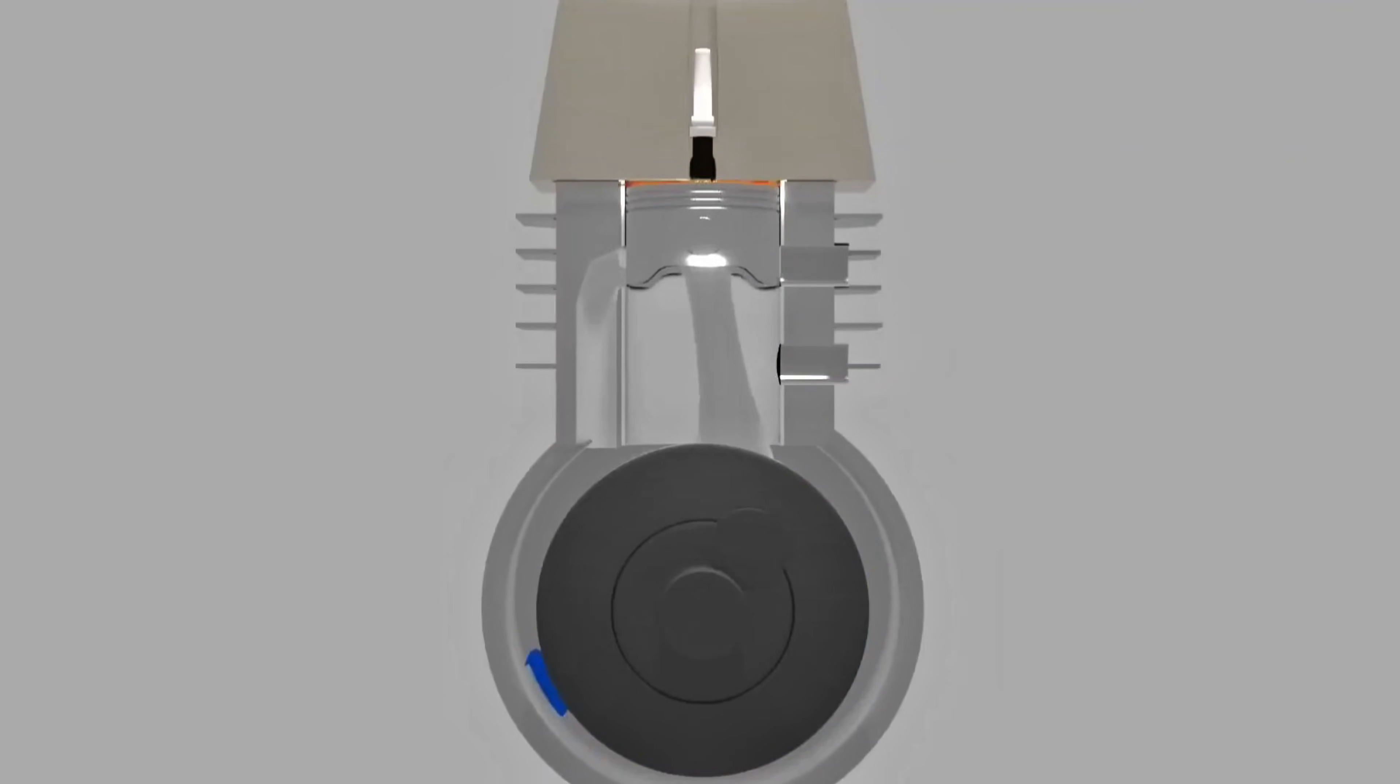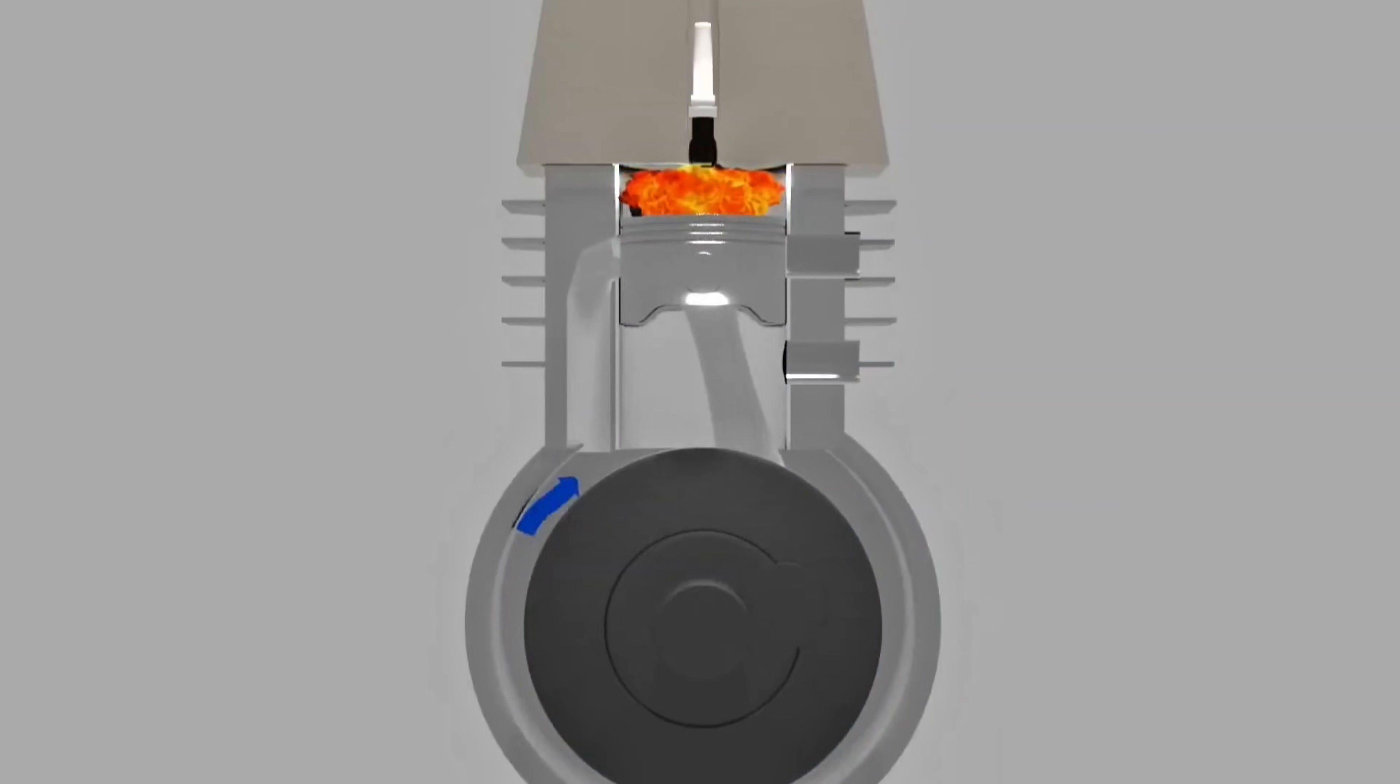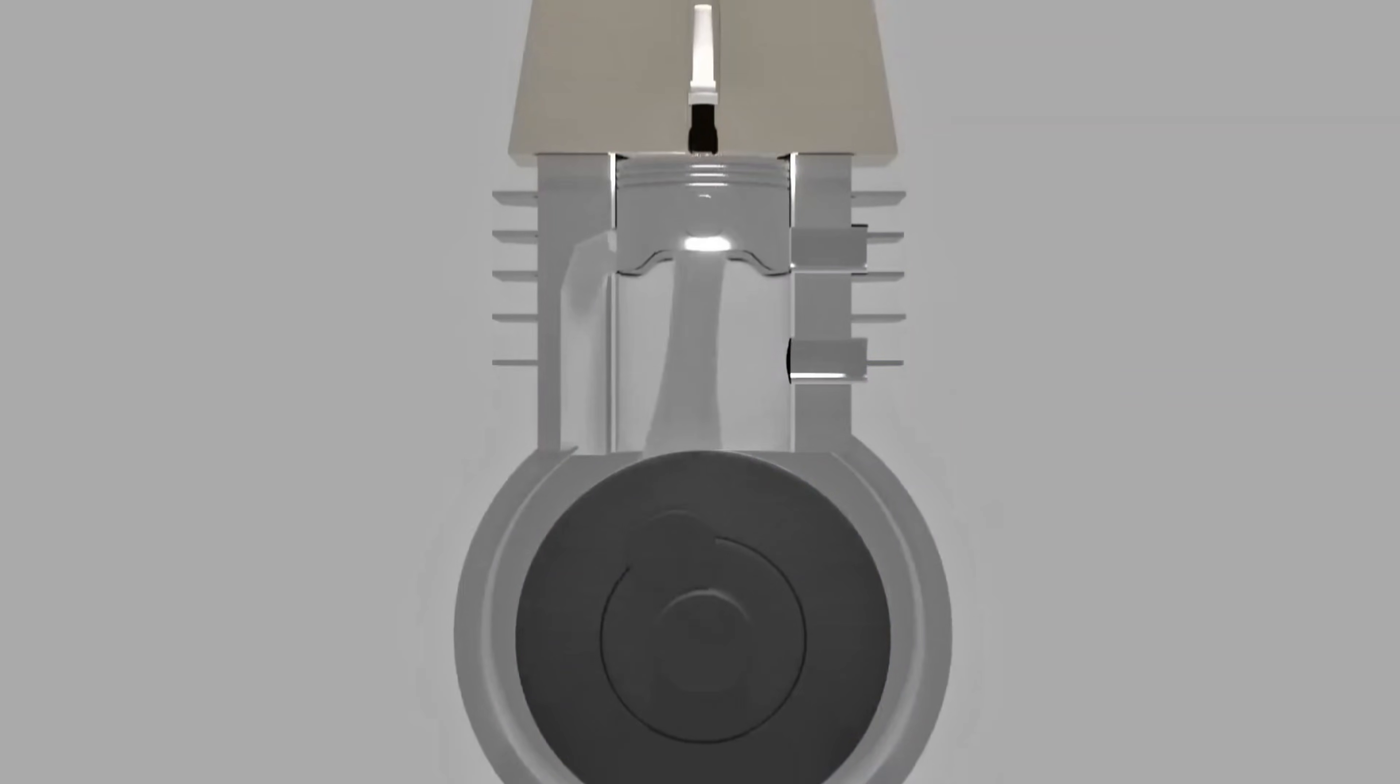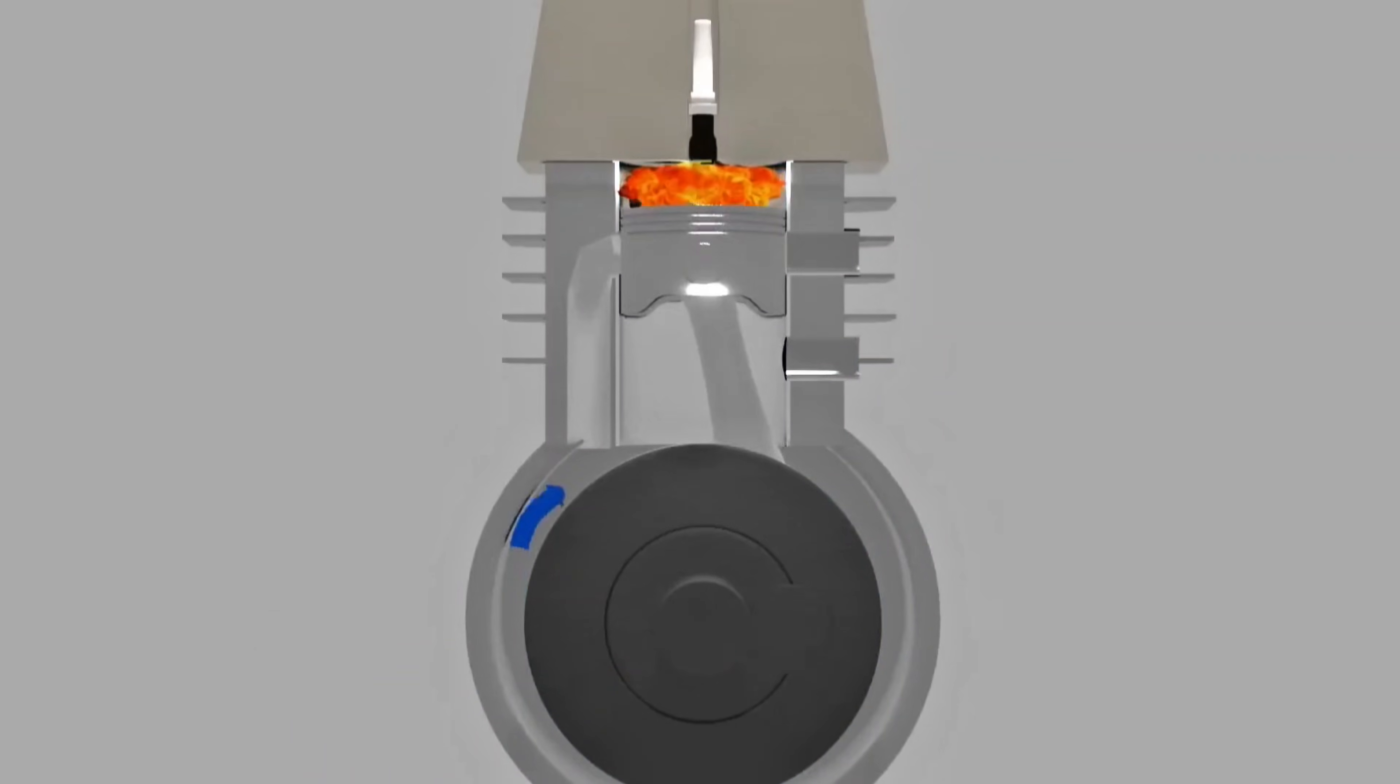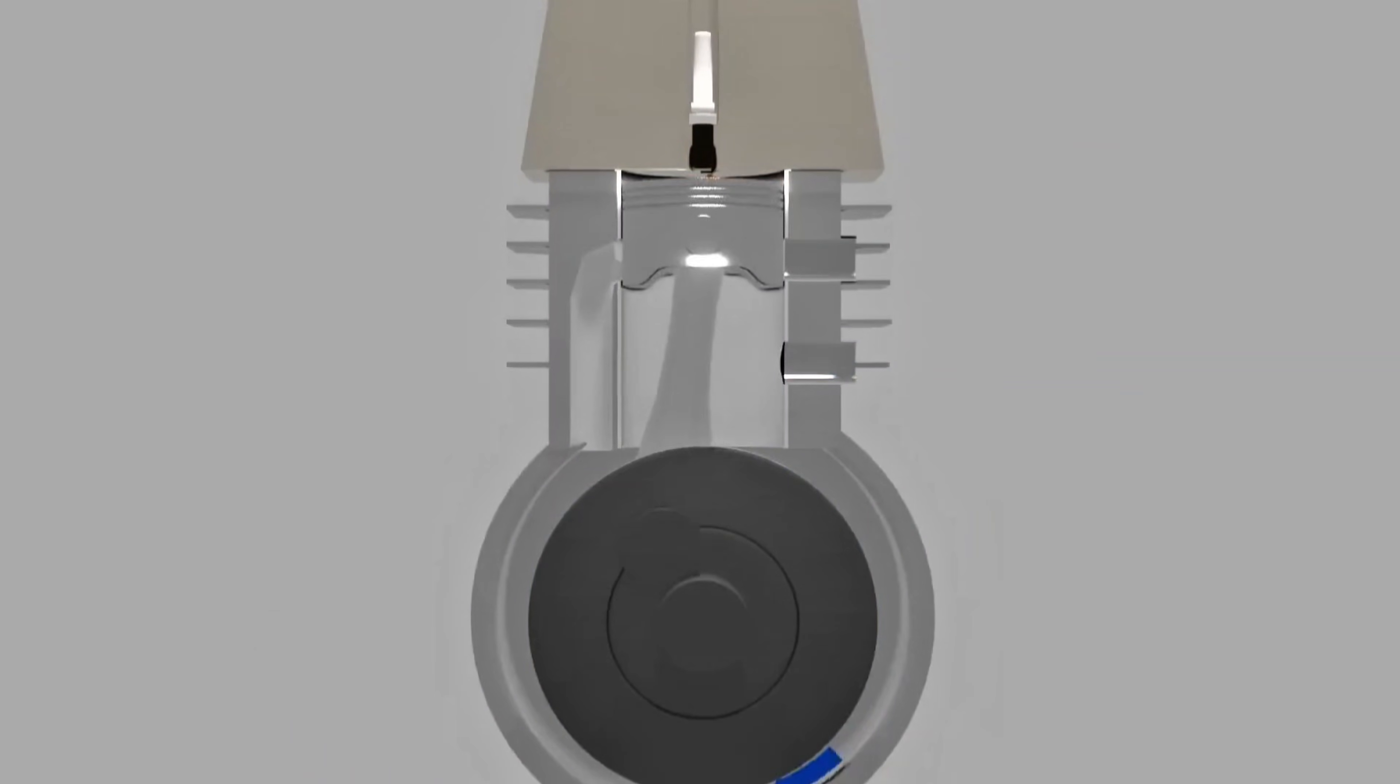However, in a two-stroke engine, the crankcase is involved in the combustion process. Instead of air and fuel from the carburetor going directly into the combustion chamber, they are first drawn into the crankcase.